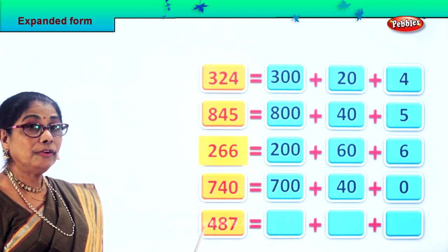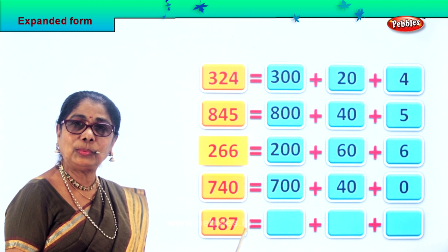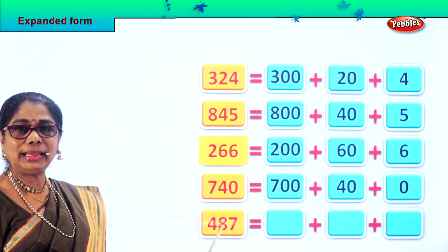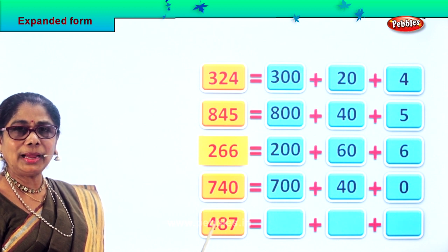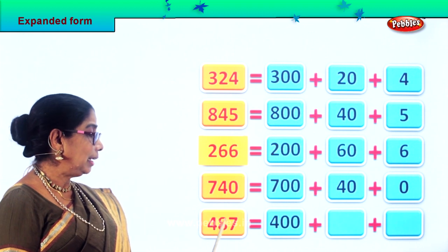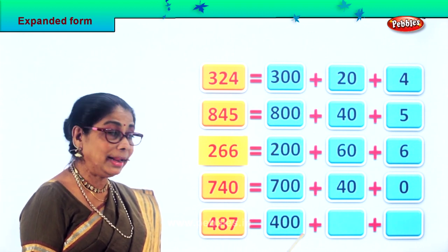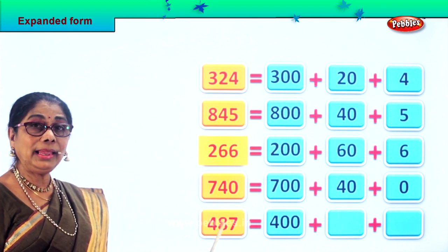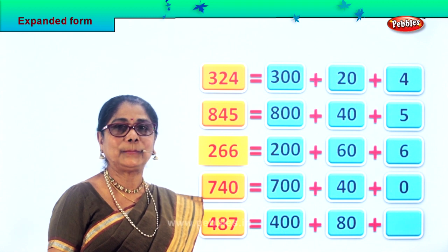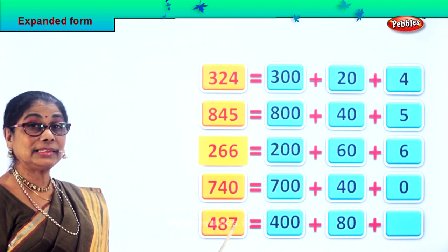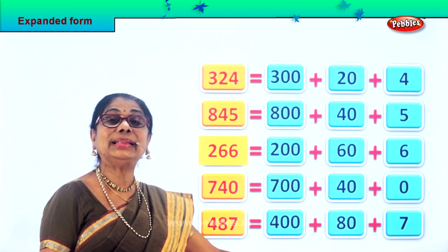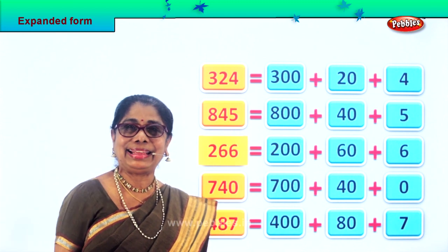Here you have 487 — seven in the ones place, eight in the tens place, four in the hundreds place. Four hundred and eighty-seven. How many hundreds? Four — so 487 equals four hundred plus eighty plus seven. This is how we expand the number.